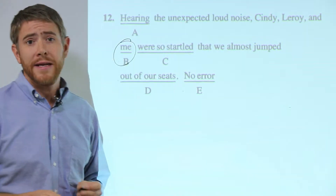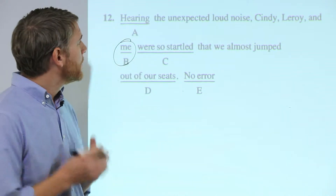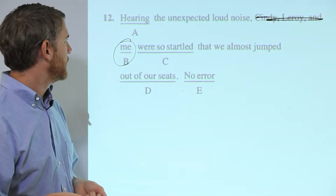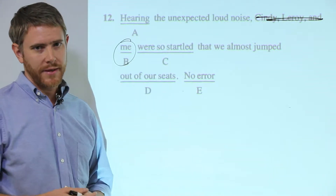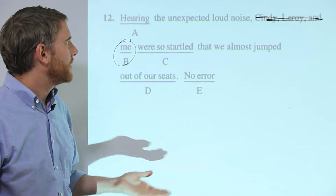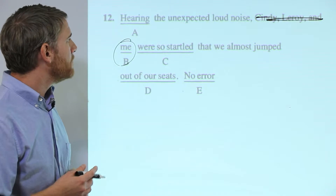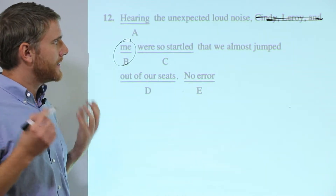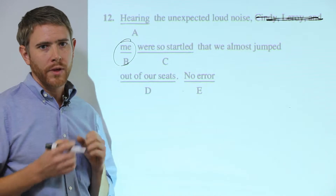The error is 'me' — it should be 'I.' One of our first techniques for telling when to use 'me' or 'I' is to get rid of the other things in a plural subject and test the pronoun alone. Here, Cindy, Leroy, and I are the subject. Because Cindy and Leroy come first, it doesn't really sound wrong to say 'me.' So get rid of the others and try it alone: 'Hearing the unexpected loud noise, me were so startled.' When you say that, it sounds flagrantly wrong. So one of the key techniques is to eliminate the other things in the subject or the object and test the pronoun alone.